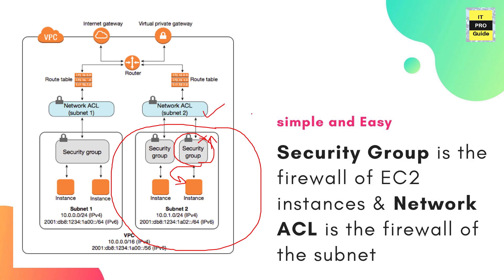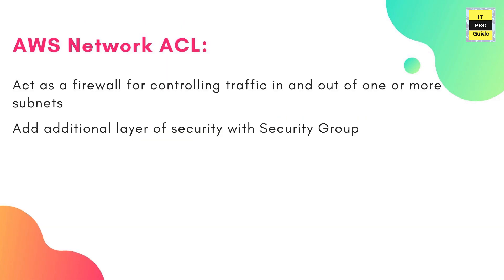So let us start with Network ACL. It is a firewall controlling traffic in and out of one or more subnets. In total in AWS, you get a two-layer security with network ACL and security group.